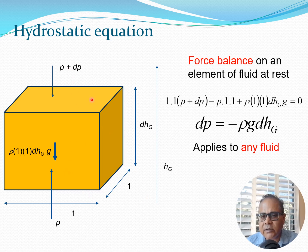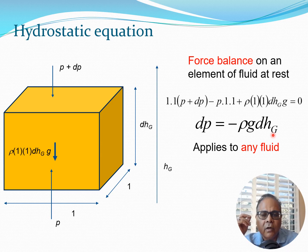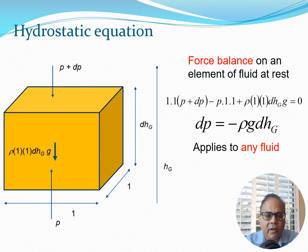Doing the force balance — two forces acting downward and one acting up — I write: (p + dp)·(1×1) − p·(1×1) + ρ·(1×1)·dhg·g = 0. After cancellation, the p terms cancel out and I get: dp = −ρ·g·dhg. This is the hydrostatic equation, linking pressure to density, gravity, and geometric altitude. It applies to any fluid since no assumption about the type of fluid was made.